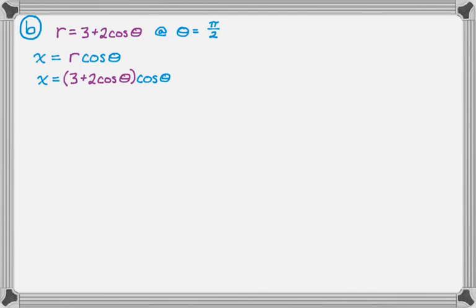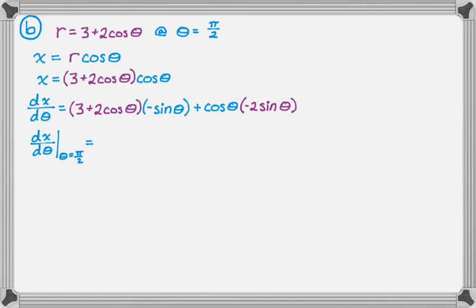So I am going to find dx d theta. So dx d theta is a product rule, so it is going to be first derivative of cosine is negative sine, and then plus the second is cosine, derivative of the first, the derivative of three is zero, the derivative of two cosine is negative two sine of theta. And now I need to evaluate this at pi over two.